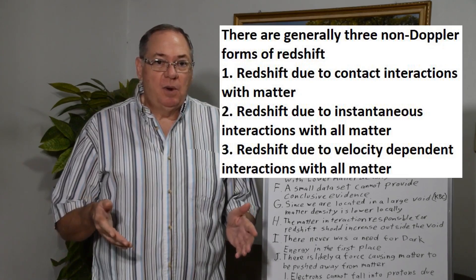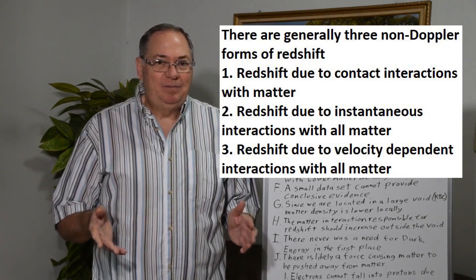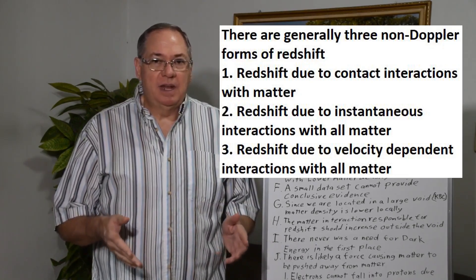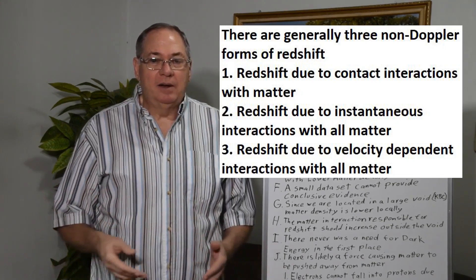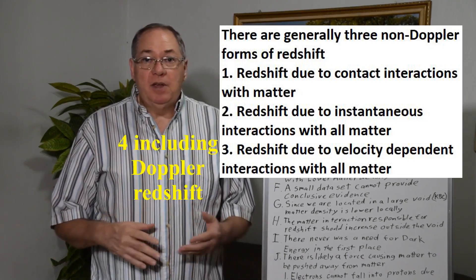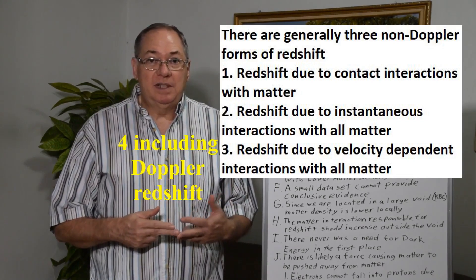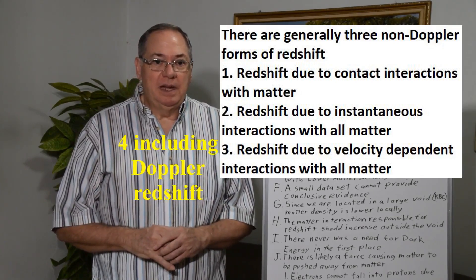And so that's not exactly what we see, so that doesn't seem to be the case. We don't have a speed of light limited interaction globally with all matter. Now it's possible you could have a combination of all three forms of redshift going on simultaneously and that's something that needs to be investigated.